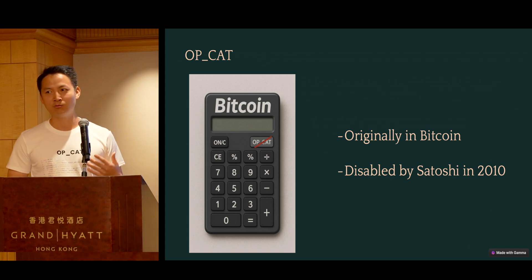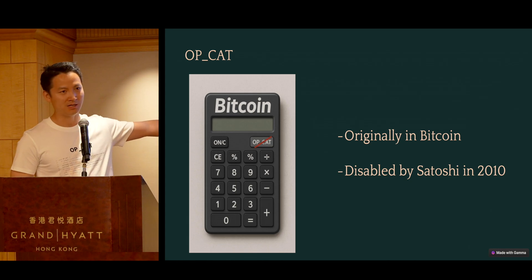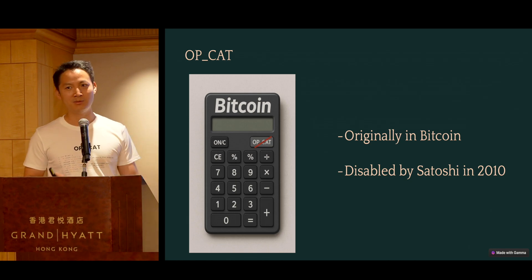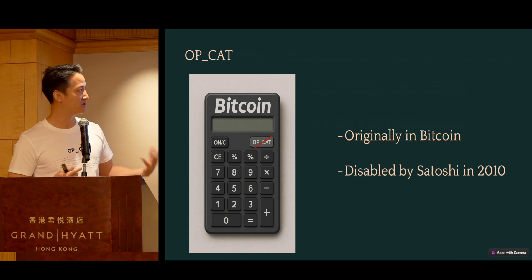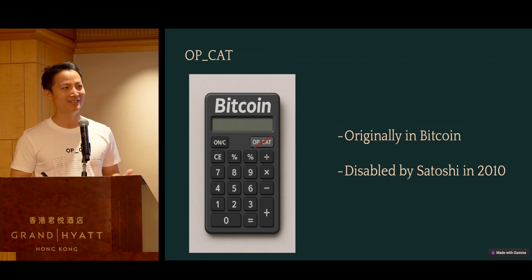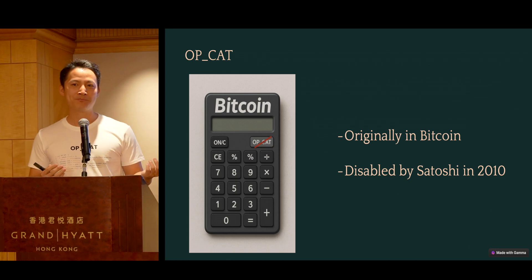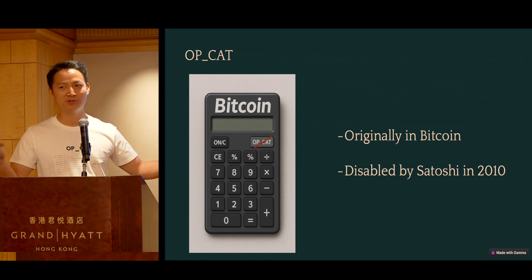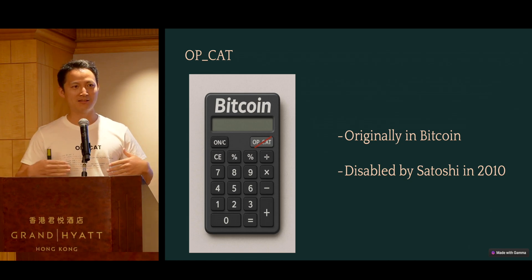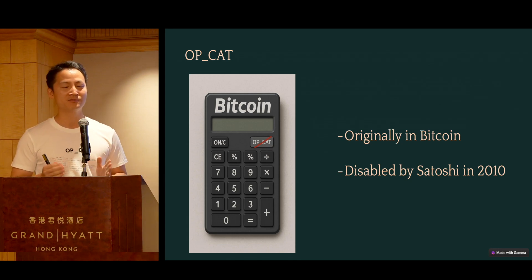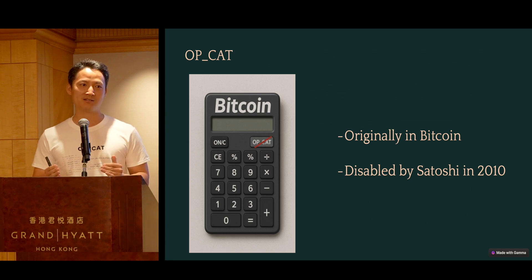That brings us back to: what is OpCAT? Think about all these buttons on a calculator. One of the most famous OpCADs is called OpCAT. First of all, if you've never heard about it — it's not 'cat' as in the animal — it stands for concatenation. For example, let's say you push on this calculator: you first put 'Hong,' and then you put 'Kong,' then you CAT them, and it becomes 'Hong Kong.' It's not something completely new — it was in the first version of Bitcoin in 2009, introduced by Satoshi himself.